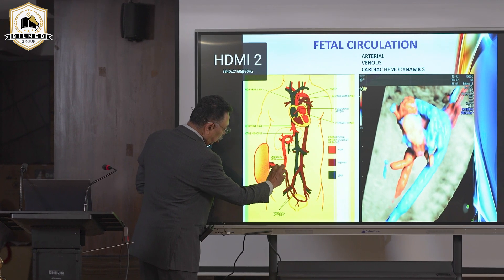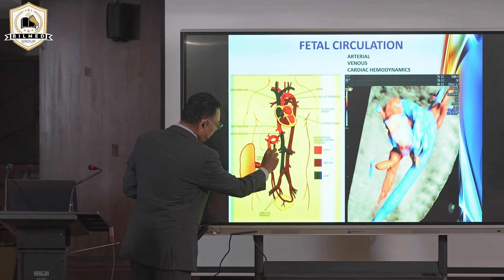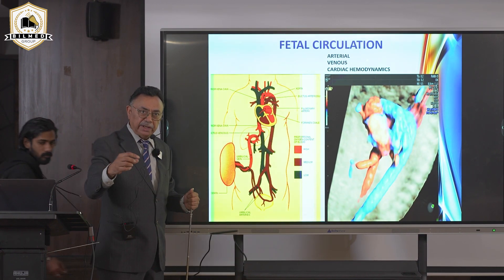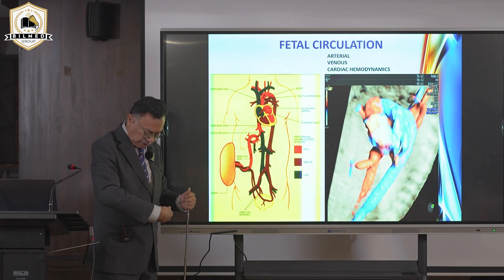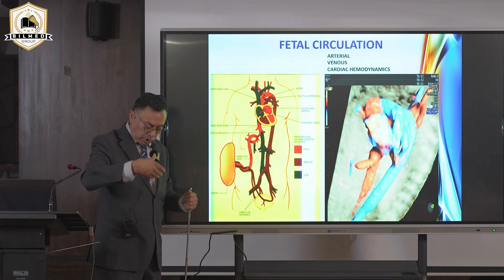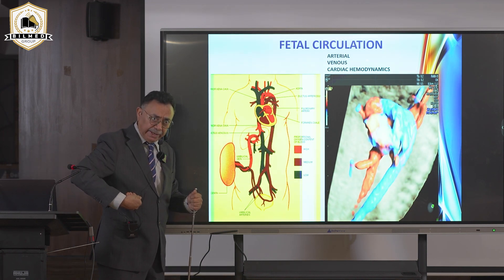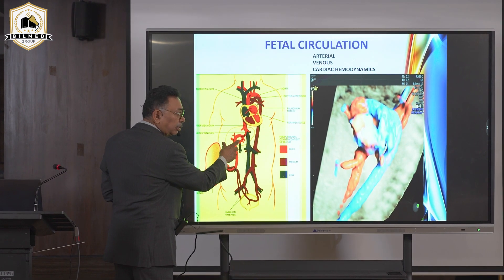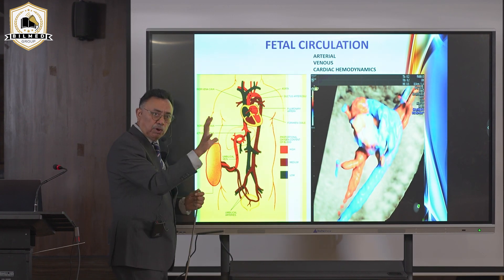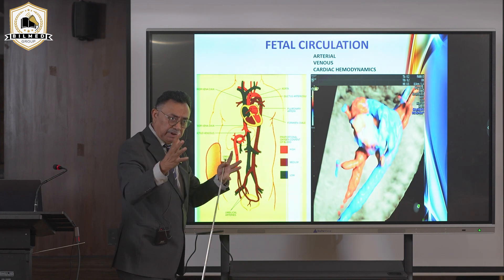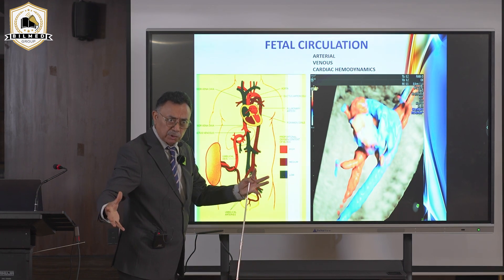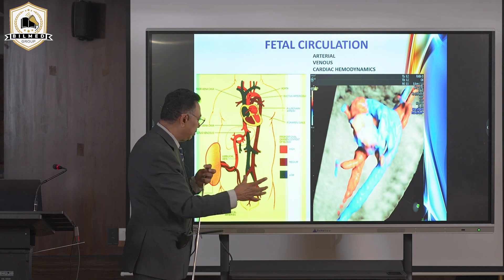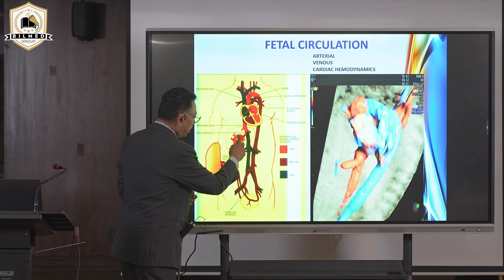The placenta sends pure blood through the umbilical vein, which enters the fetus through the umbilicus and goes toward the liver at an angle. It divides, with 30-40% storing nutrients in the liver, causing liver and abdominal circumference growth. If this does not happen, growth retardation occurs and abdominal circumference becomes reduced.